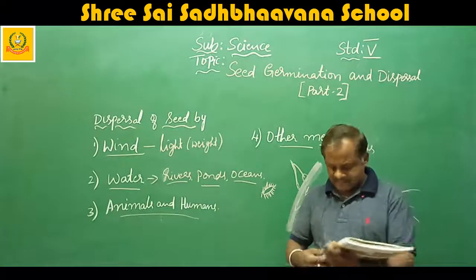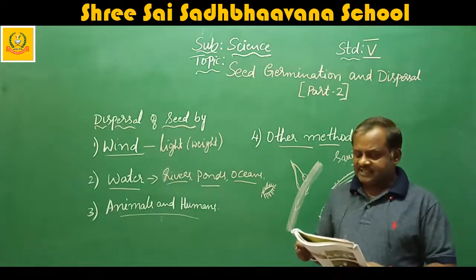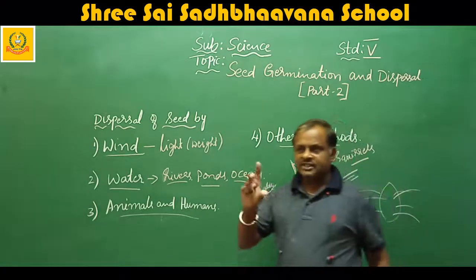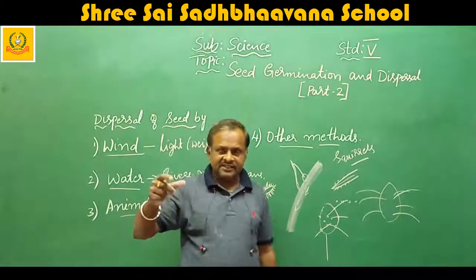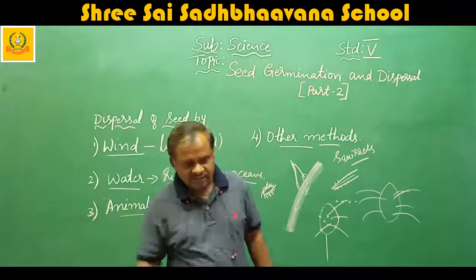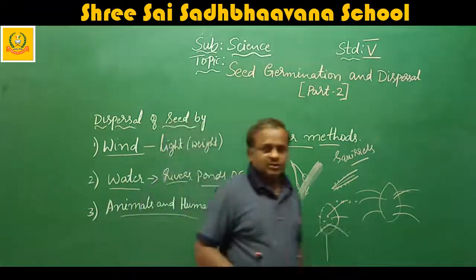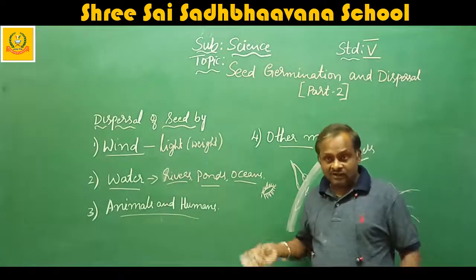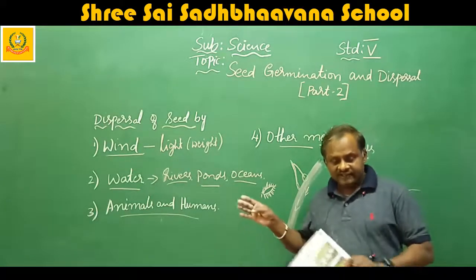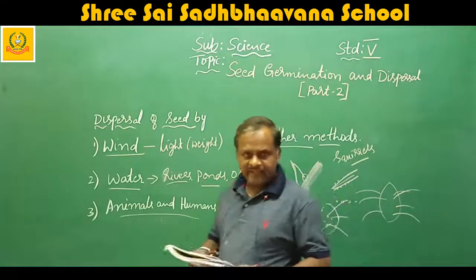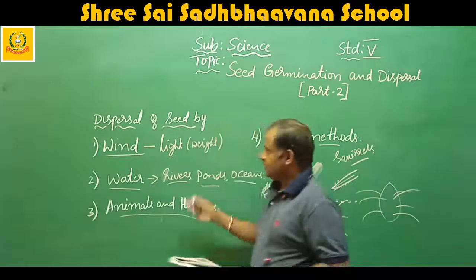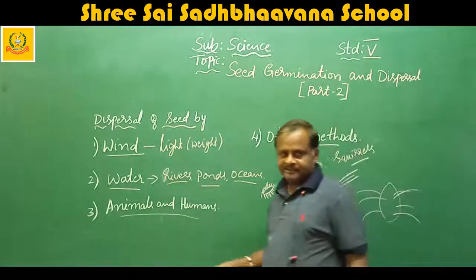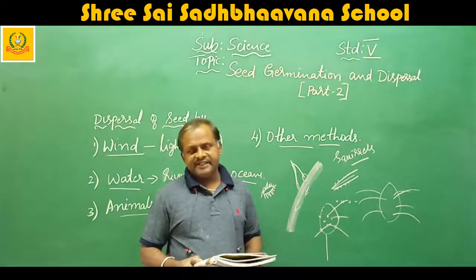The casing of fruits from trees such as chestnut splits when they fall on the ground, and the fruit rolls away from the tree. Some round-shaped fruits move when the wind blows. When heavy rainfall comes, water also transports seeds from one place to another. So dispersal of seeds happens through wind, water, animals and humans, and other methods.